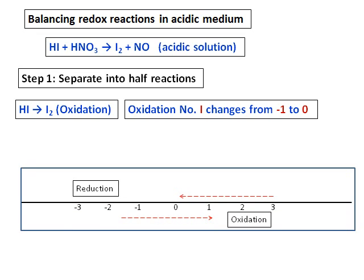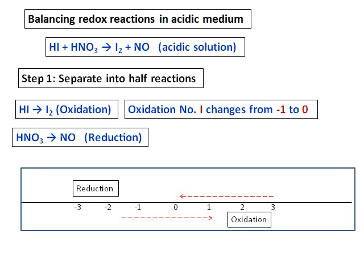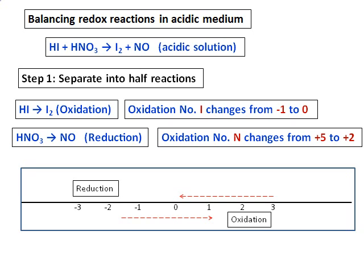For your reference, the number line is also given below. The other redox reaction is HNO₃ becoming NO, where the oxidation number of nitrogen changes from +5 to +2. This is reduction. Refer to the number line and it will be more clear to you. Let us proceed further and apply all the other steps.